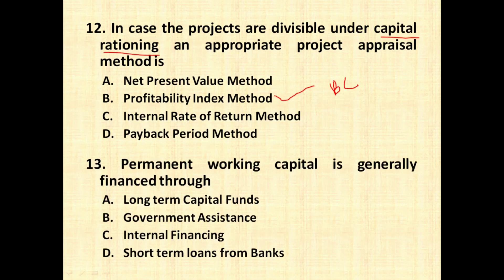The next question is: permanent working capital is generally financed through what? There are two types of working capital policy — permanent working capital policy and temporary working capital policy. Permanent working capital policy is one wherein you finance your working capital through long-term capital funds. So the answer will be long-term capital funds.